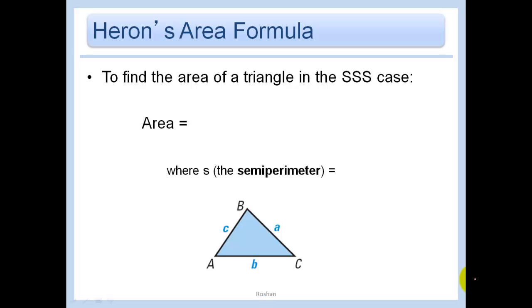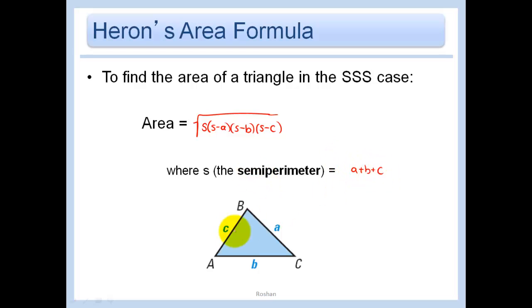Finally, we're going to cover Heron's area formula. Just like in the law of sines we had area = ½ab·sinC for the side-angle-side case, now for three sides (SSS) the area is the square root of s(s−a)(s−b)(s−c), where s is the semi-perimeter. The perimeter is a+b+c, and the semi-perimeter is just one half of that. You first calculate s, then plug into the formula.